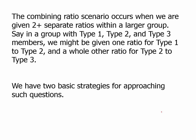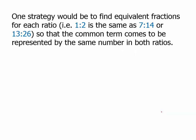We have two basic strategies for approaching such questions. One strategy would be to find equivalent fractions for each ratio, so that the common term comes to be represented by the same number in both ratios. So, if we have one ratio from type one to type two, and another ratio from type two to type three, we'd want to find equivalent expressions for both ratios, so the type two number is the same in both ratios, and that would allow us to put it together in one big ratio, type one to type two to type three. We'll have some examples of this in this video.